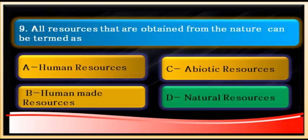Human resources relate to the quantity and quality of human beings, and human-made resources are those which humans create. So options A, B, and C are wrong, while option D is correct: all resources obtained from nature are called natural resources.